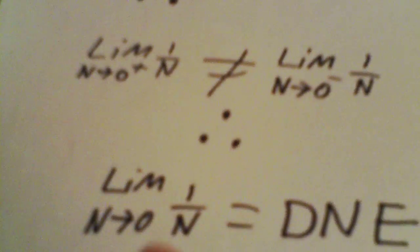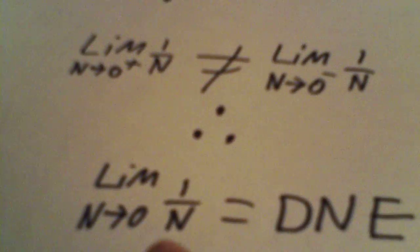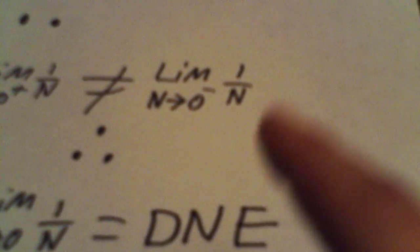However, that is the right-hand limit. The left-hand limit of that is negative infinity. Because those limits are not the same, the overall limit of 1 over N as N approaches 0 does not exist.